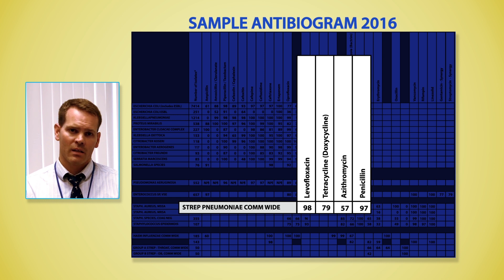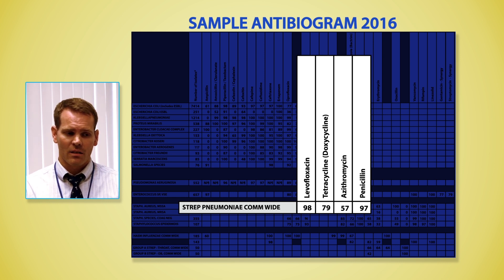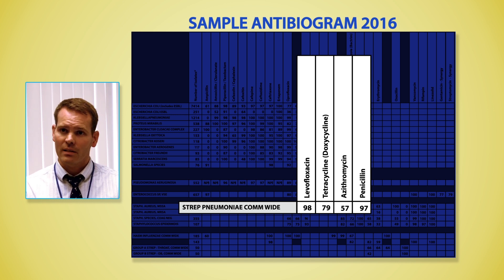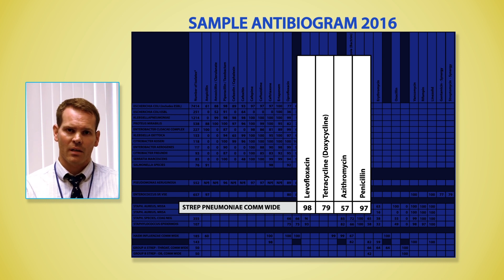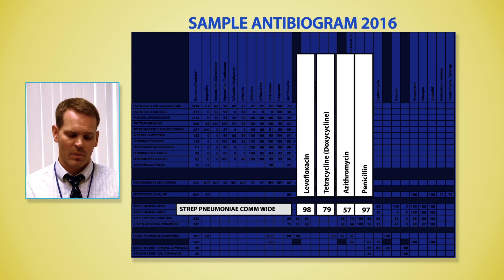It's important to know that the current IDSA guideline for treatment of community-acquired pneumonia suggests azithromycin as an agent that can be used in people with essentially no comorbid conditions and without previous antibiotic therapy, but notes that if your local resistance rates are higher than 25%, you should avoid that particular antibiotic. This is a perfect example of where the antibiogram is integrated into a guideline to really dictate your empiric antibiotic therapy.